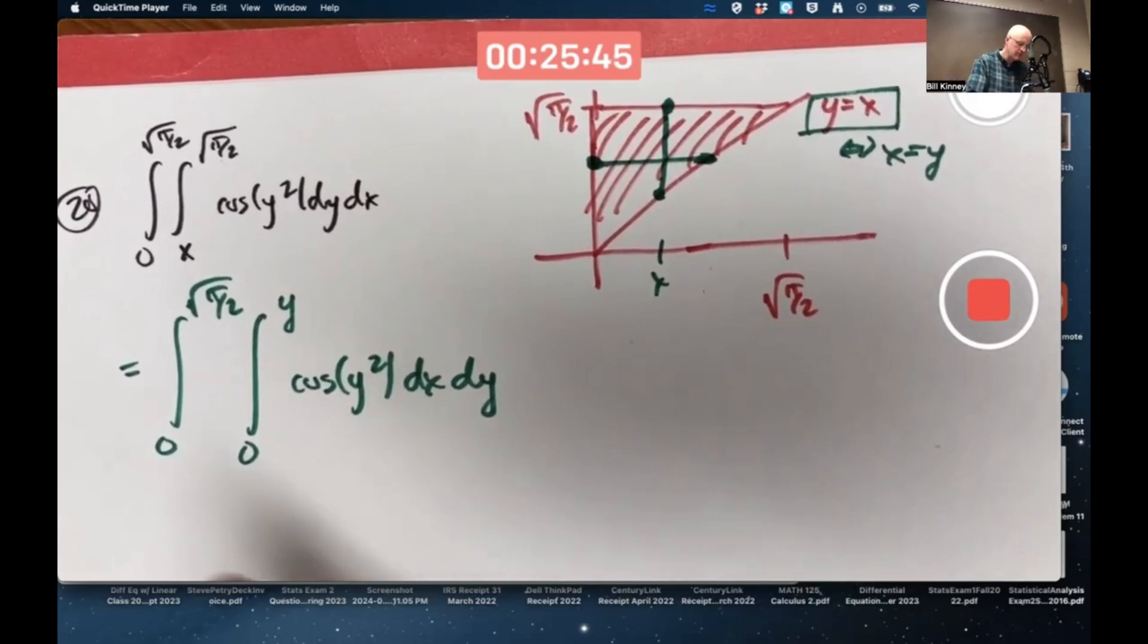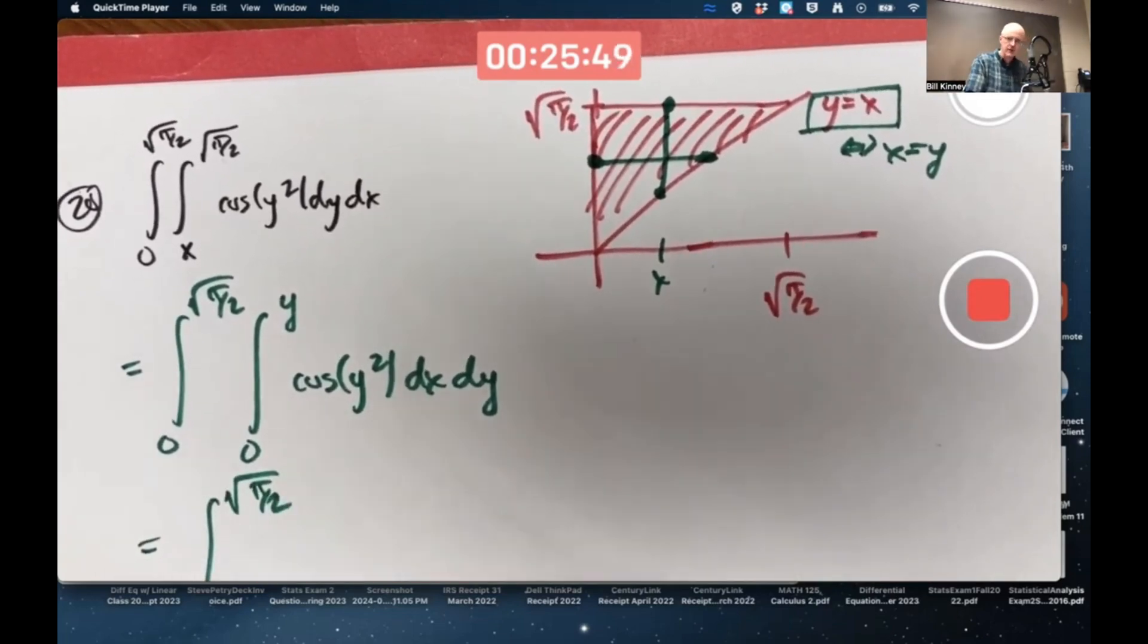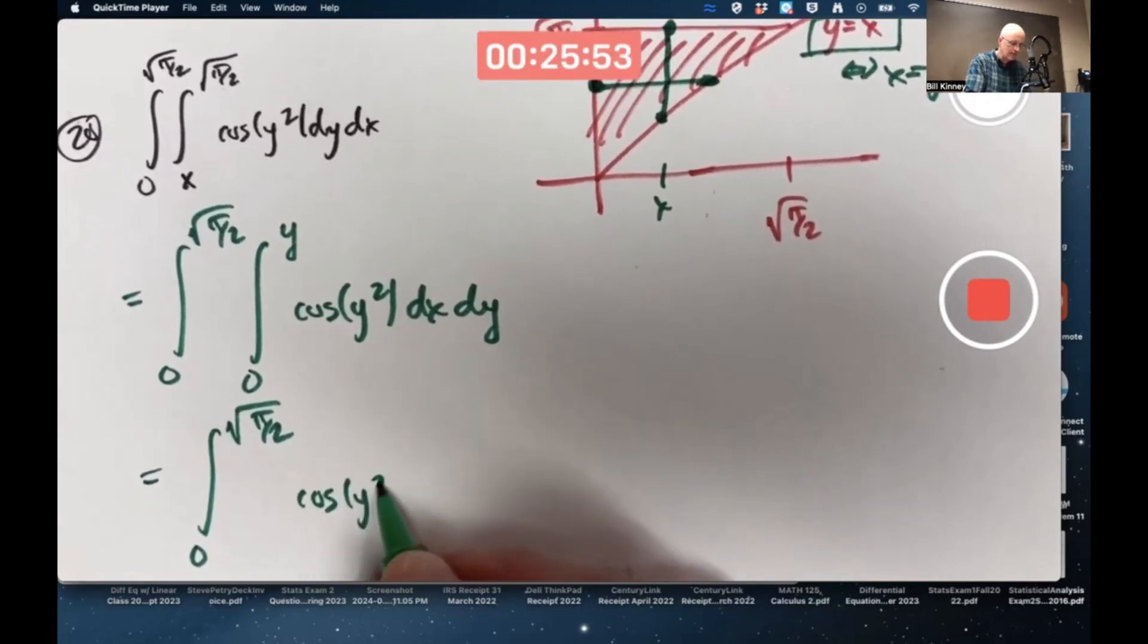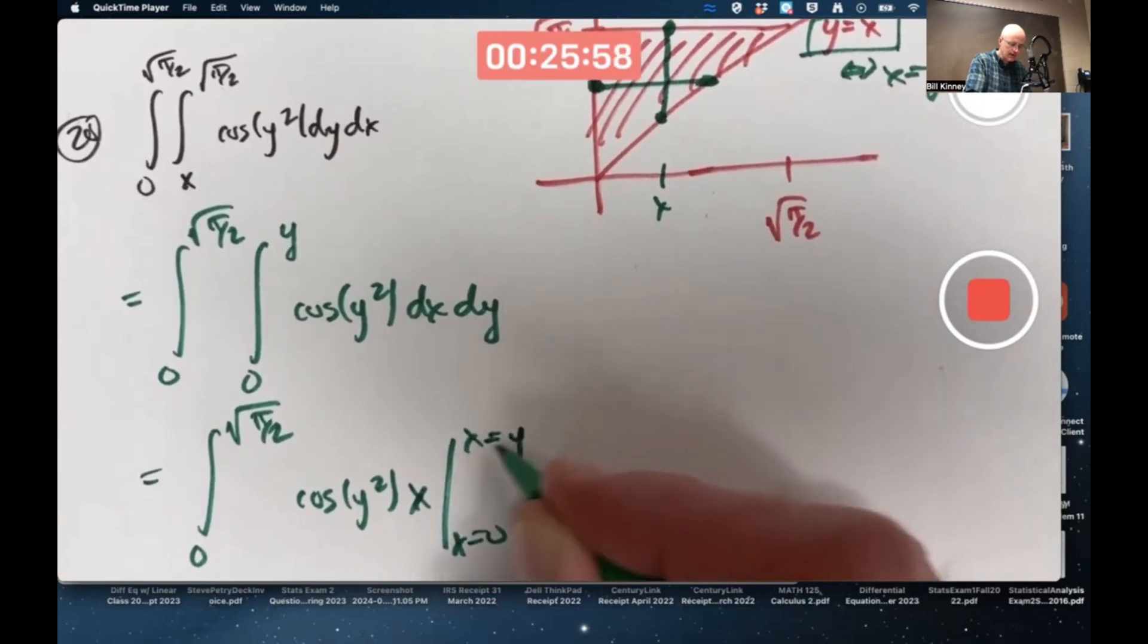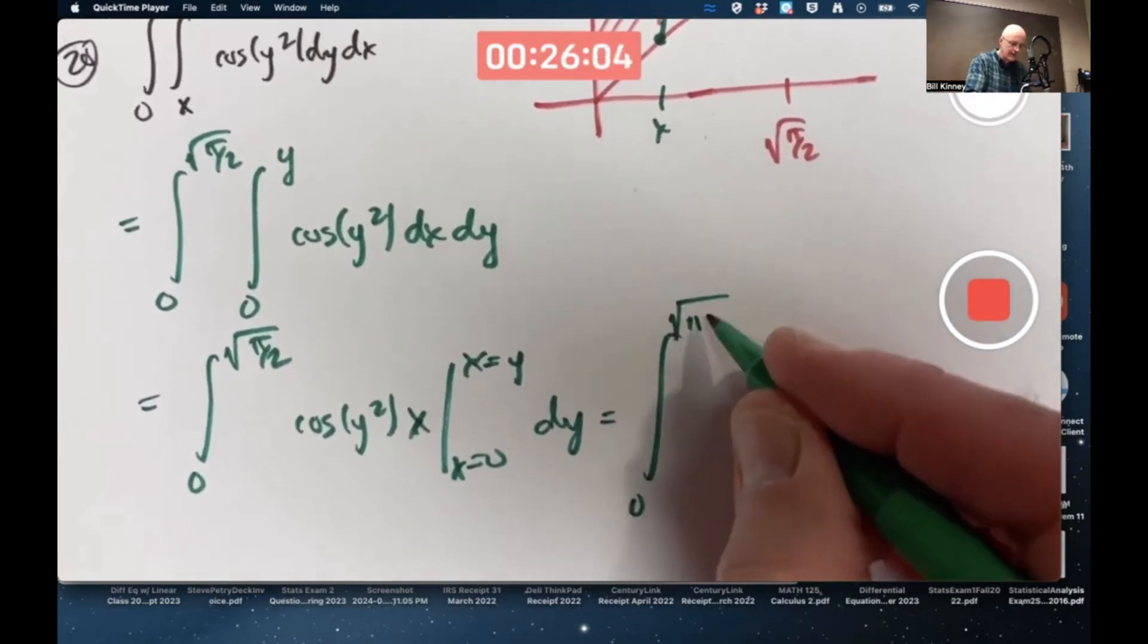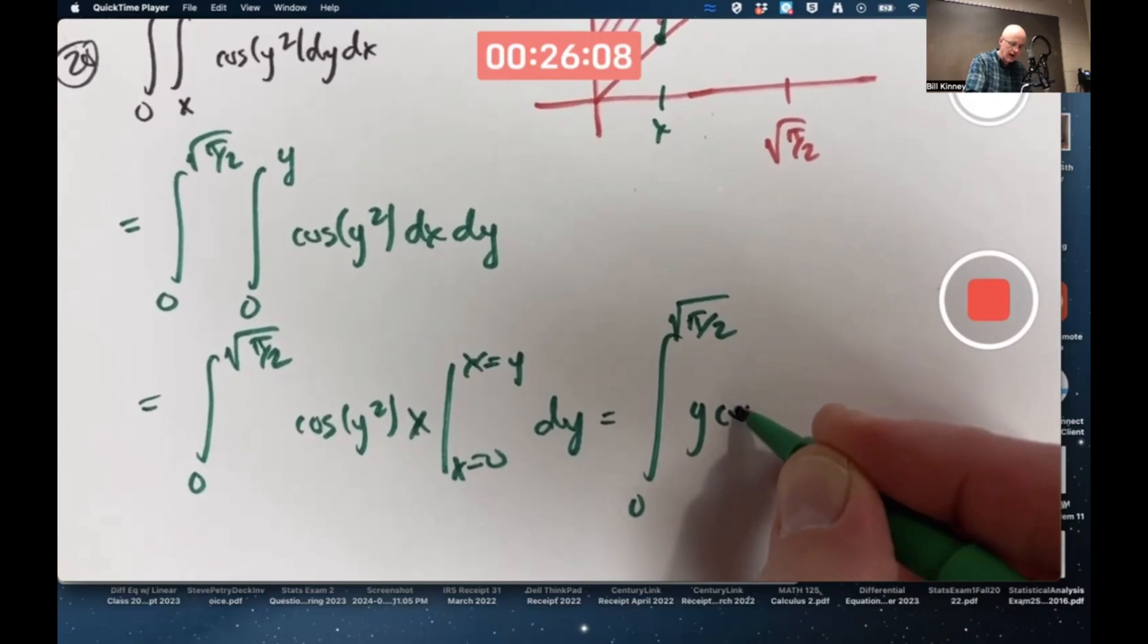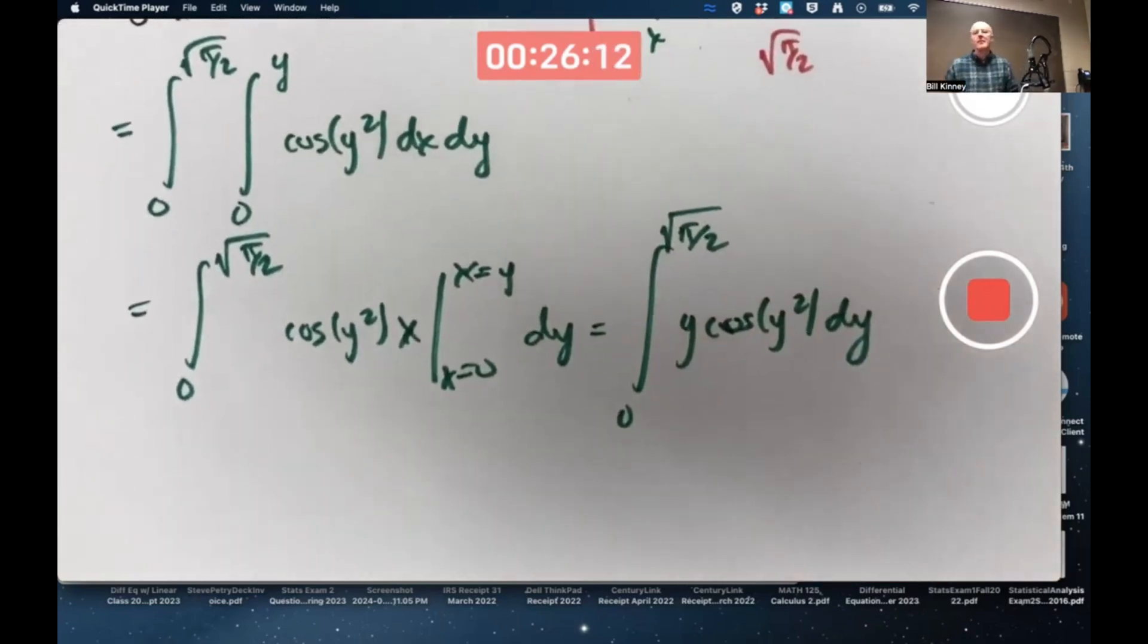And now it becomes doable, because now for the inner integral, you treat y as a constant, and you get cos y squared x, x goes from zero to y. And when you do that, you ultimately integrate y cos y squared, which is not as hard as it looks. That's doable.